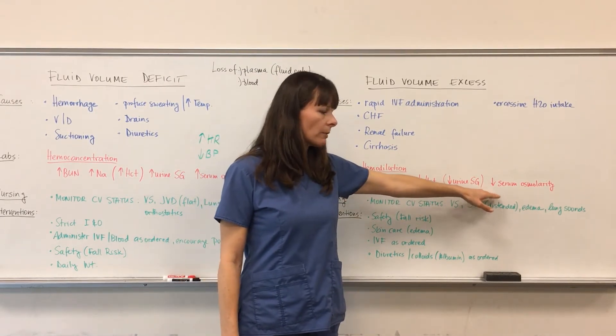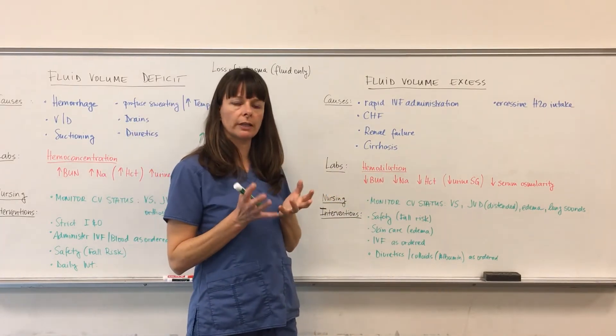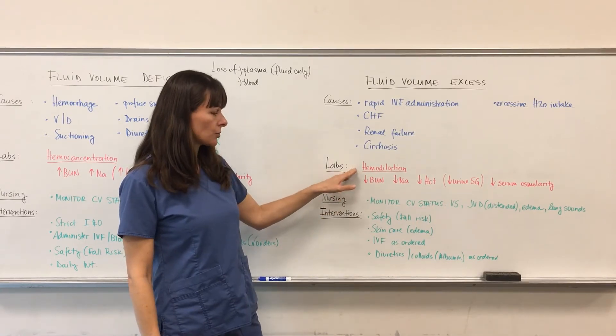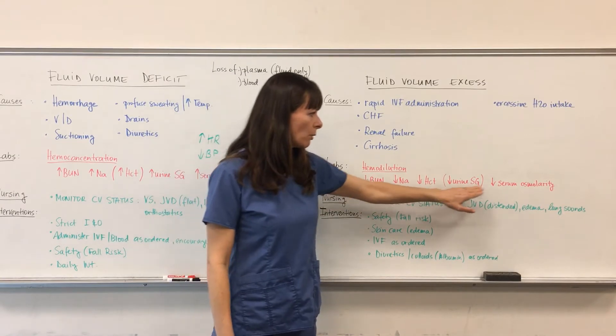But as it applies to serum osmolarity, again that will be lowered because every particle that floats around in our intravascular system will be more dilute, hemodilution right here. So everything, just note all the arrows point down here, and note urine specific gravity is in parentheses.